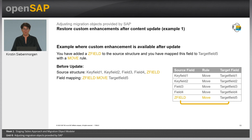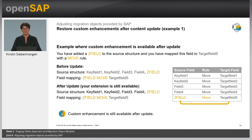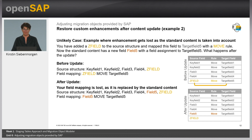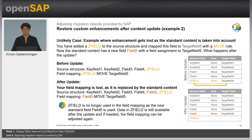You have added a source field to the source structure and mapped this field to target structure field 5 with a move operation. Before the update, you have the field mapping with the move operation to the target field 5. After the update, your extension is still available. However, if SAP updates the migration object with a new rule for exactly this target field, your field mapping will be lost and replaced by the standard content. The source field is not used anymore in the field mapping, but it is still available in the staging table. If needed, you can adjust the field mapping again, but then you need to decouple your migration object by choosing Ignore content update so that it is treated as a custom migration object.